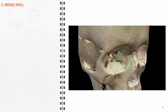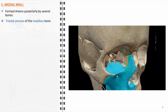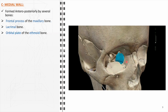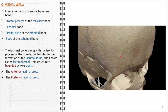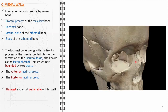The medial wall of the orbit is formed anteroposteriorly by several bones: anteriorly, it begins with the frontal process of the maxillary bone, followed by the lacrimal bone, then the orbital plate of the ethmoid bone, and towards the back, the body of the sphenoid bone. The lacrimal bone along with the frontal process of the maxilla contributes to the formation of the lacrimal fossa, bounded by the anterior lacrimal crest — part of the maxilla — and the posterior lacrimal crest attributed to the lacrimal bone. The medial wall is the thinnest and most vulnerable among the orbital walls.